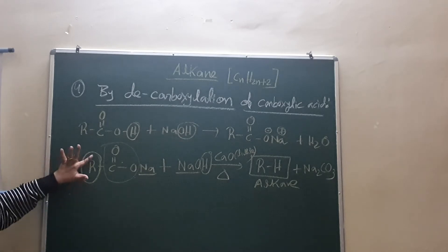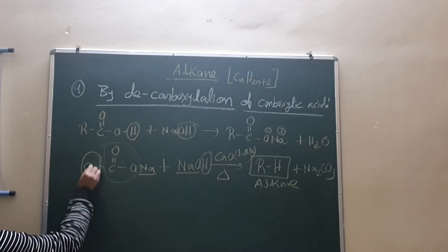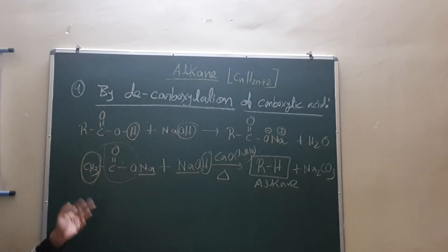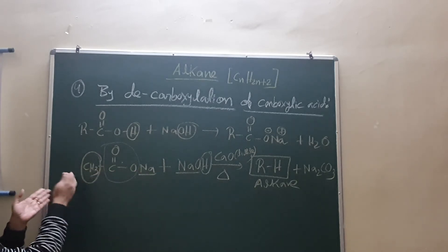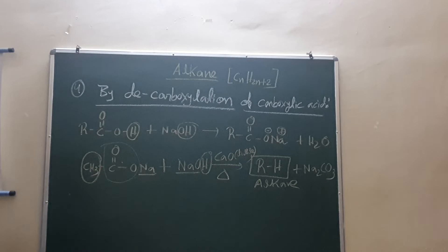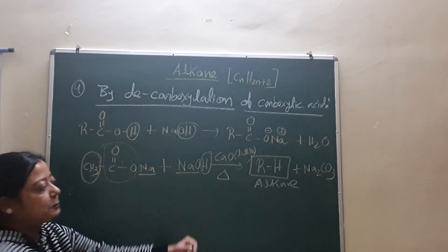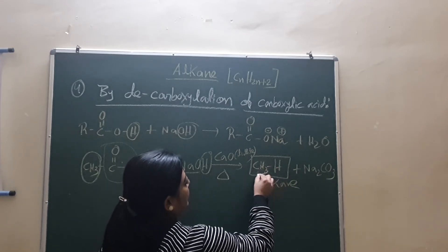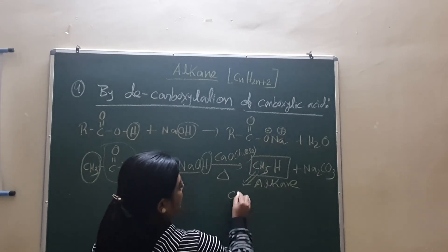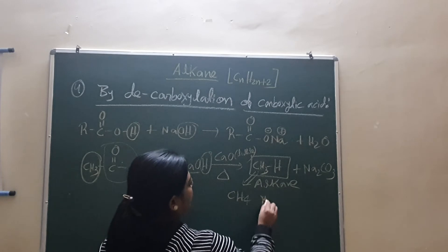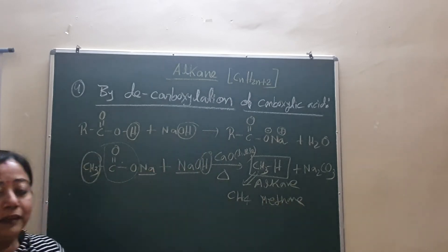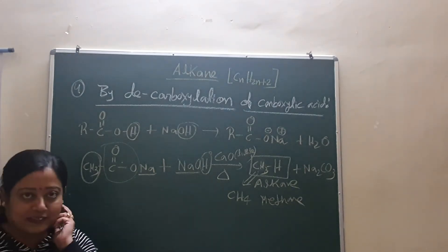Understood? Now look, if instead of R we take CH3, suppose CH3-COONa, what is this? Sodium ethanoate because it's the sodium salt of ethanoic acid. Then what thing you get? CH3 and H. Now CH3 and H, if we make this alkane, CH3 and H means what? CH4, that is methane. So in this way methane, propane, any alkane you can prepare by this decarboxylation reaction.